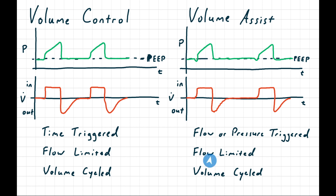The limit and cycle are exactly the same in assist mode compared to control mode. The patient decides when to start the breath, but they don't decide when to end the breath. We're still flow limited, so the patient doesn't decide how much of a breath to take. We're still volume cycled, so the end of inspiration still comes after the programmed tidal volume is met. In a pure volume assist mode, if the patient decides not to breathe for a couple of minutes, the ventilator won't do anything — it just won't give any breaths.